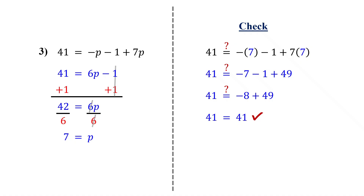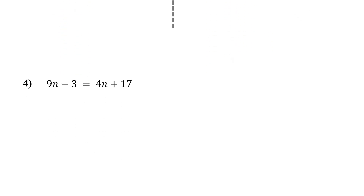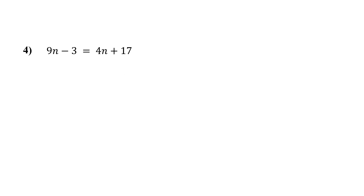Up to now, all our equations had variables only on one side. But in the next example, we have variables on both sides of the equation. In this case, our first step is to collect all the variables on one side. Let's collect them on the left side.